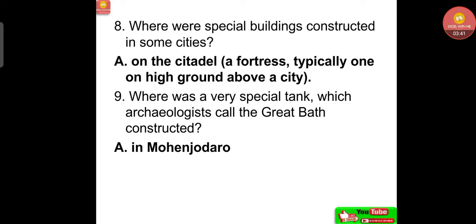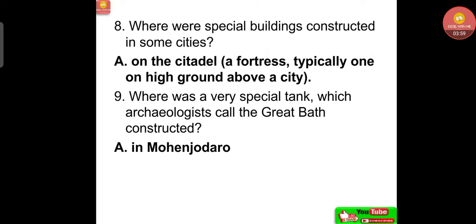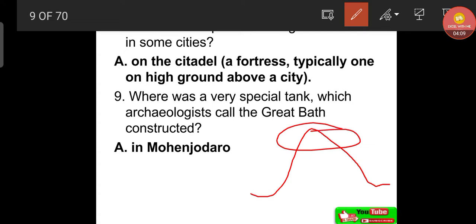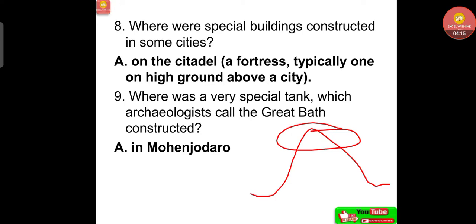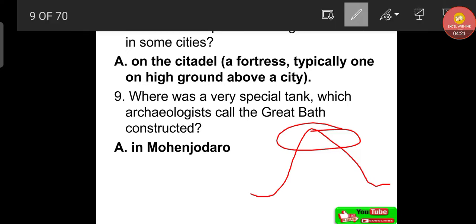Special buildings were constructed in some cities on the citadel. The citadel is a fortress typically on high ground above a city. The highest area is the citadel, and below it is the lower town.